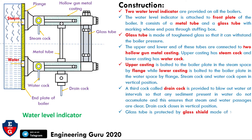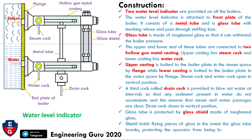The glass tube is protected by a glass shield made of toughened glass. As seen in this figure, this is the glass shield which protects the glass tube. The shield holds flying pieces of glass in the event the glass tube breaks, protecting the operator from being hurt. It is provided with a screw cap for cleaning purposes. This completes the construction of the water level indicator.